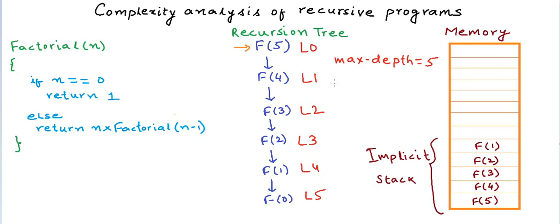So in this particular case, the space required by the program is directly proportional to the input n. So we say that this is an order of n algorithm in terms of space complexity.